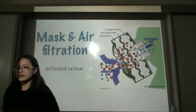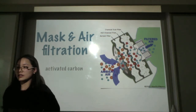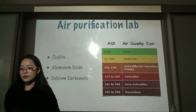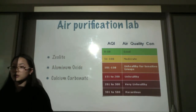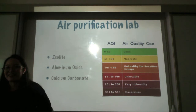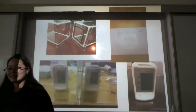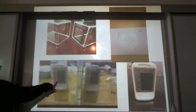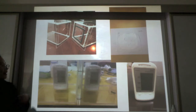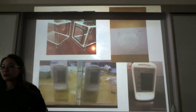Most masks and air filtration systems use adsorbents — specifically activated carbon, which is kind of like graphite but with tiny holes so dust and particles can adhere to those surfaces. My air purification lab used three types of adsorbents: zeolite, aluminum oxide, and calcium carbonate. I prepared two AQI measurements, and I have a clear box with one AQI sensor on each side.